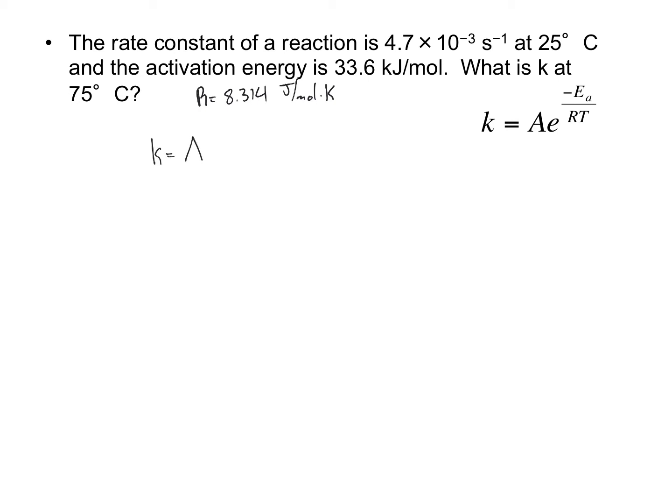So as you probably know, I like to rearrange my equations first before I plug in the numbers most of the time. And so if I'm solving for A, to isolate that, I think the easiest thing to do is multiply this times E to the positive Ea over RT on both sides.